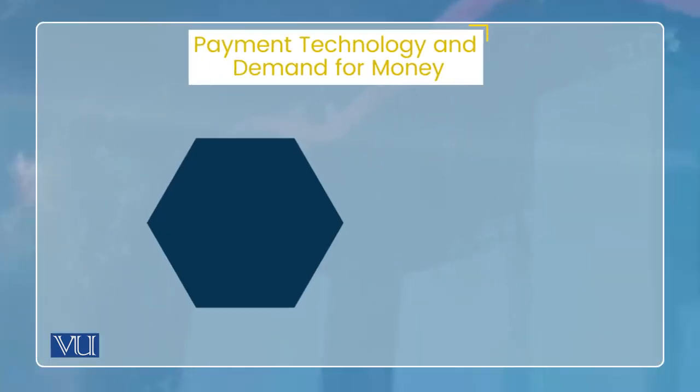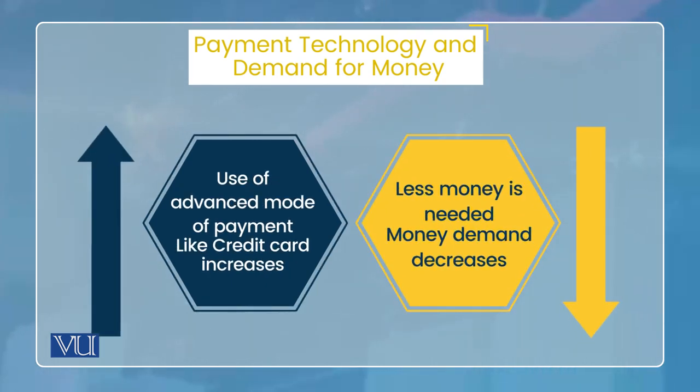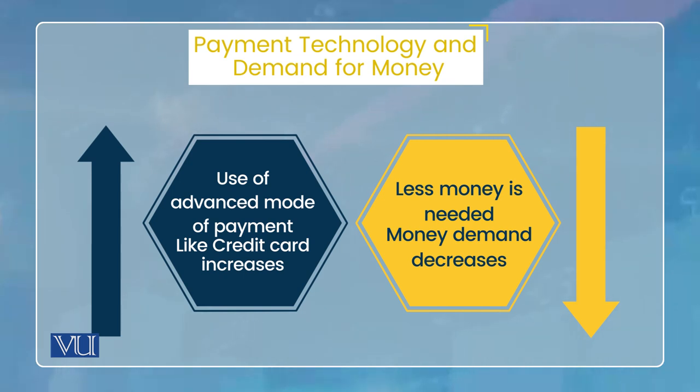Payment technology ek important determinant hai portfolio theory ke mutabik. You know that over time, payment methods have advanced. As we discussed in the previous lecture about electronic money and e-money, when the barter system evolved and payment technology improved, you don't need to hold as much money in your pocket. If a credit card is acceptable at your shopping center, then there is no problem. This means that if payment technology is improved — like electronic money or credit cards — then your money demand will be reduced. That is why payment technology matters for money demand.